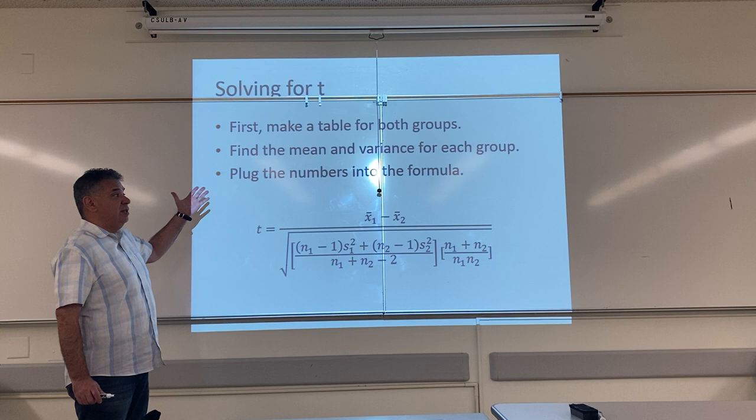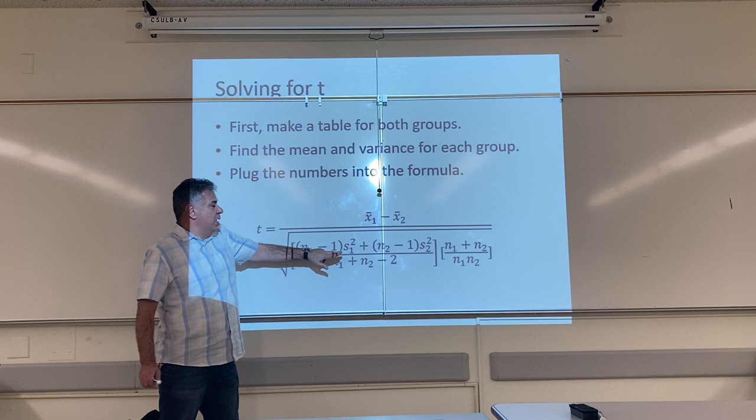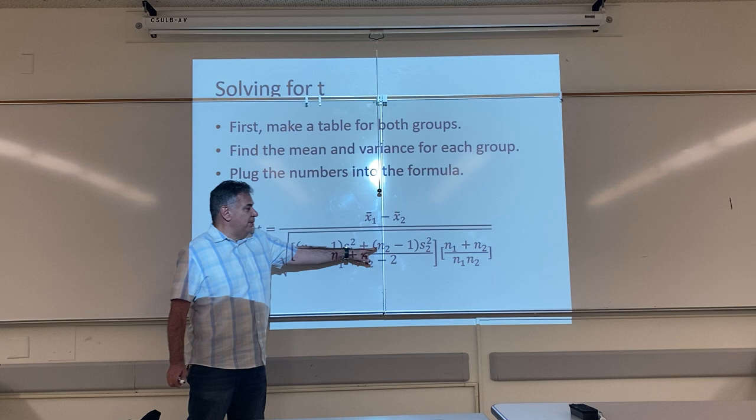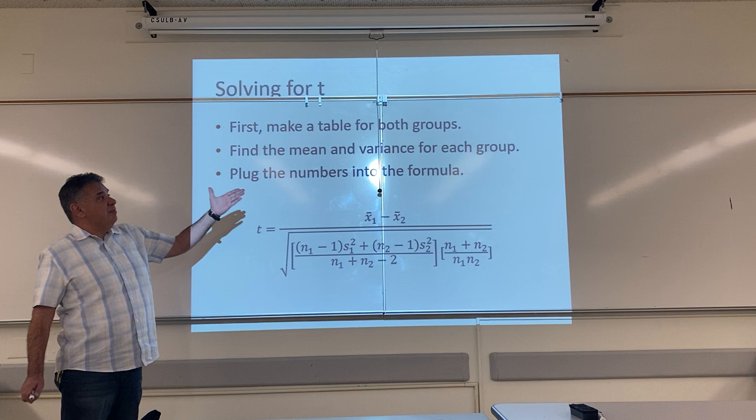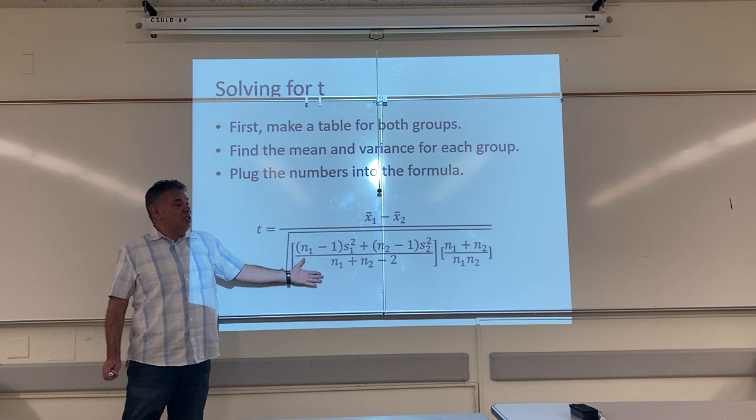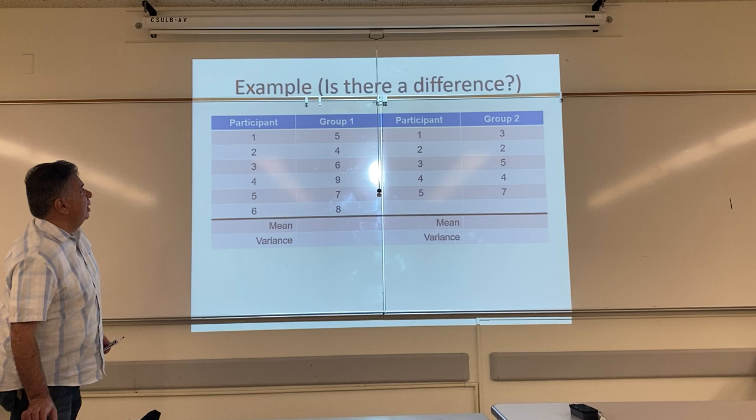So, how do I solve using the T formula? I need to find the mean and the variance for each of my groups and obviously I need to know the sample sizes for each of my groups. So I'm going to make a table for both groups. I'm going to find the mean and the variance and then I'm going to write my formula and plug those numbers into my formula and solve for T. So let me show you an example.